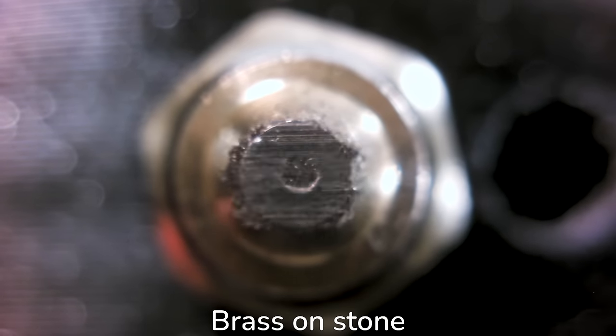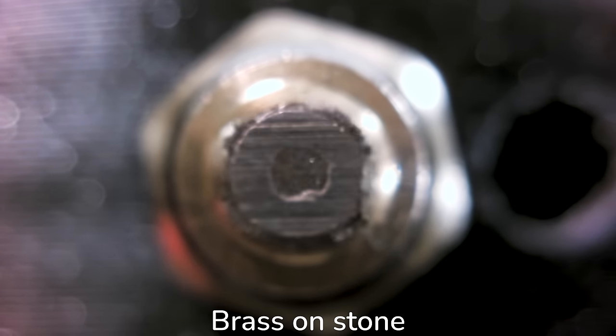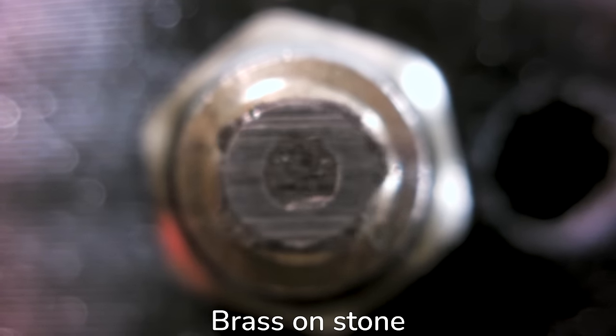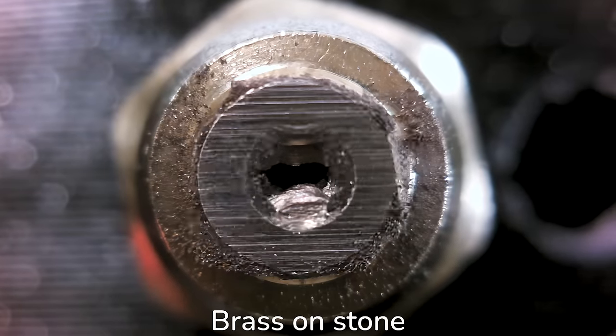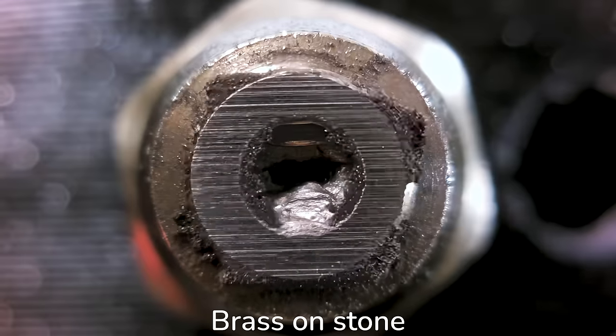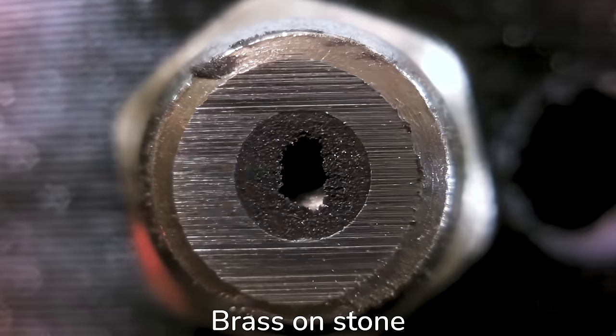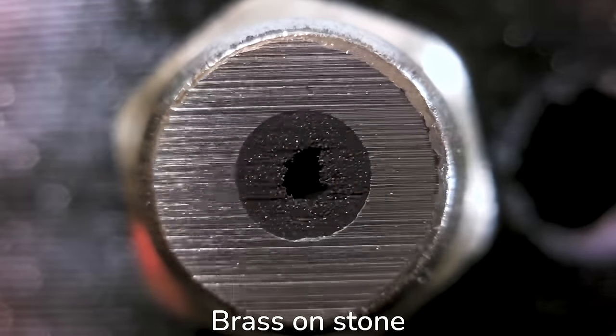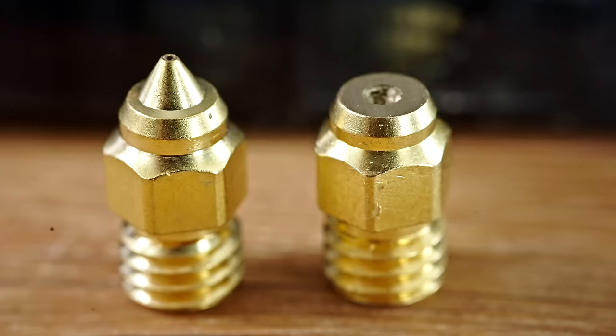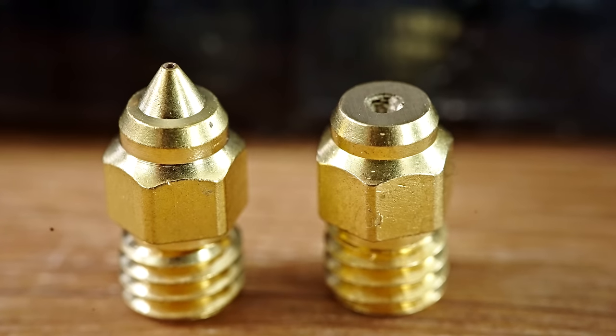And when it comes to just how aggressive this is, here's what it did to the brass nozzle. It's gone. I even had to stop the test halfway through and readjust the zero position, because the nozzle was now so much shorter that it was completely out of the camera's focus plane. I mean, I could measure how much length we lost exactly, but honestly, I don't quite see the point in that. There's just not much left.